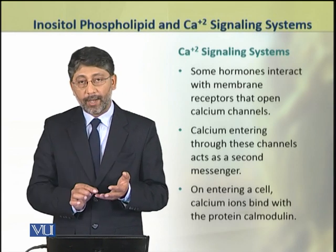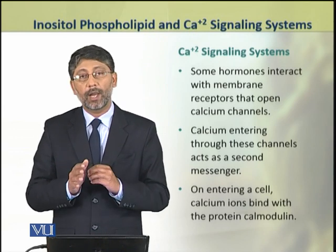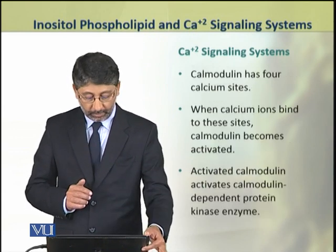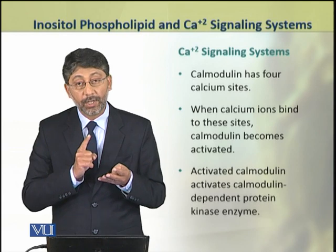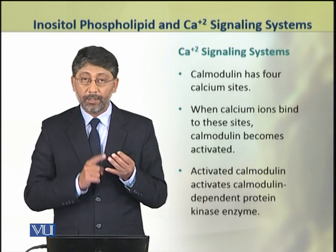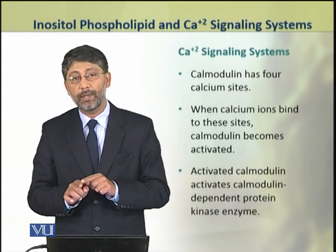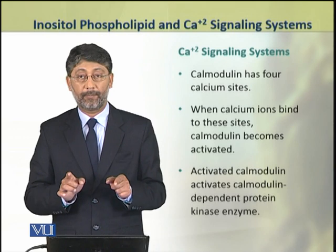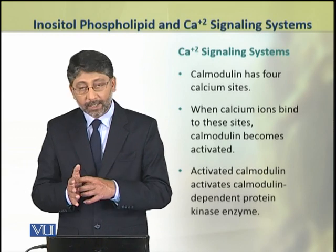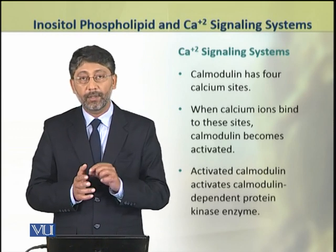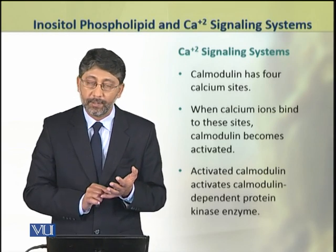When calcium ions enter the cell through these channels, they bind to a protein called calmodulin. Calmodulin has 4 active sites that bind calcium ions. When calcium ions bind to these sites, calmodulin becomes activated. The activated calmodulin then activates an enzyme called calmodulin-dependent protein kinase.